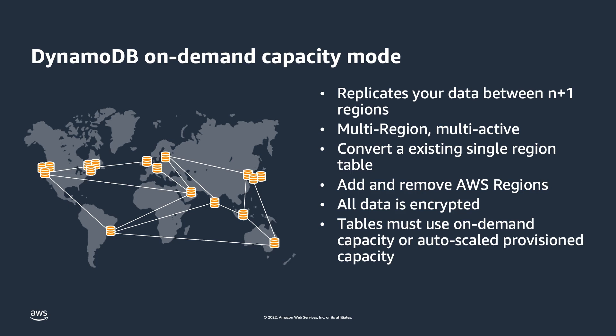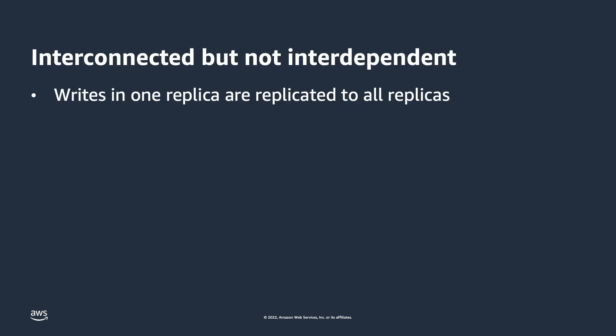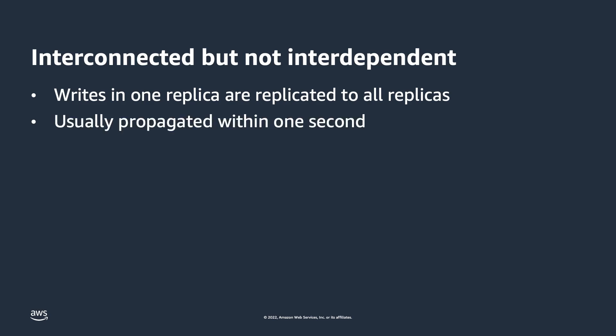Now that you know the basics of Global Tables in DynamoDB, let's dive that next level deeper into how things operate and what you need to know to be successful with it. DynamoDB global table replicas are interconnected but they are not interdependent. This means table replicas are connected and do exchange data, but their functioning and maintenance are not dependent upon each other. If something happens in AWS Region A, it does not affect other global table replicas in other regions. Your app should be writing to the replica in the same region as the app for the lowest latency and overall performance. With that, your data will usually propagate to other replicas within one second.